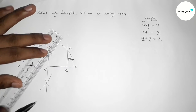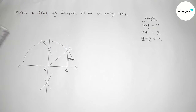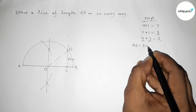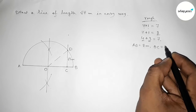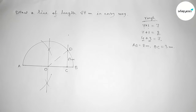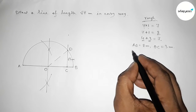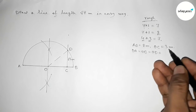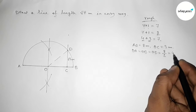First, joining O and D. Given: AB equals 8 centimeter and OC equals 3 centimeter. OA, OB, and OD are all radii of the semicircle, so they are all equal to 8 divided by 2, which equals 4 centimeter.